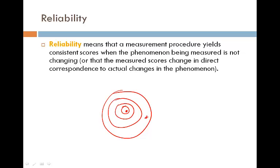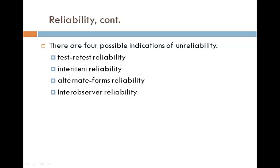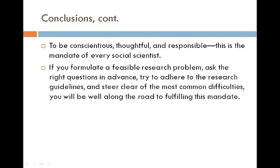There are four types of measures we can use to ensure that our measurement is reliable: test-retest reliability, inter-item reliability, alternate forms reliability, and inter-observer reliability. And that is the end of Chapter 4.